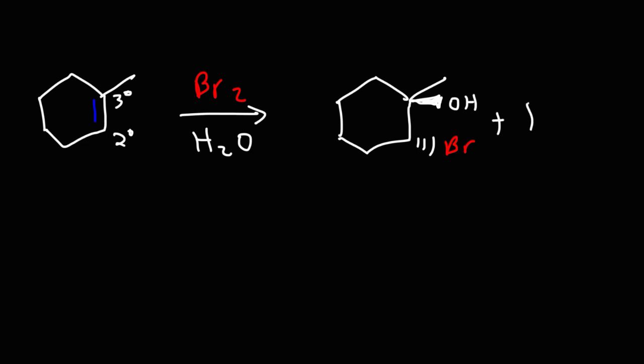And then that's not the only product that we can get. We can also get the enantiomer, where the OH group is placed in the back and the bromine group is placed in the front. So as you can see, we get a mixture of products for this particular reaction.